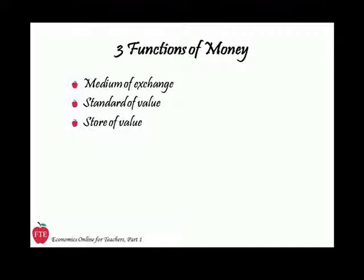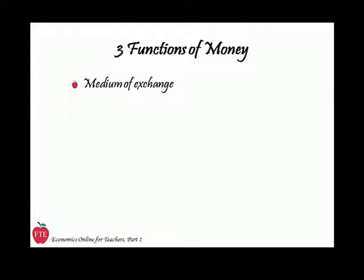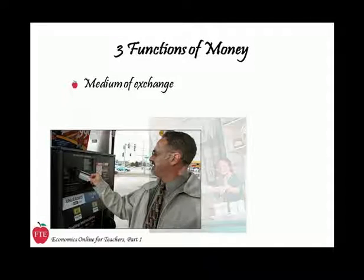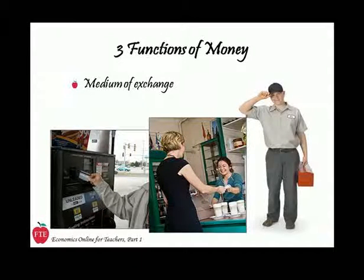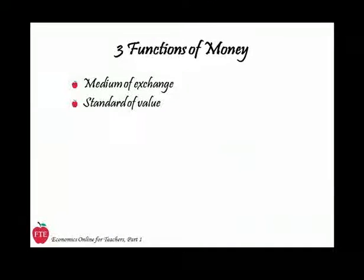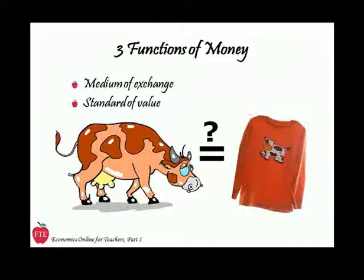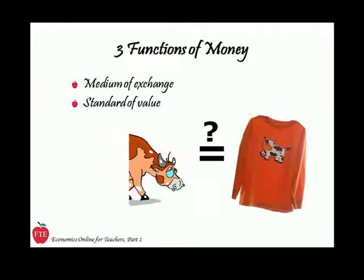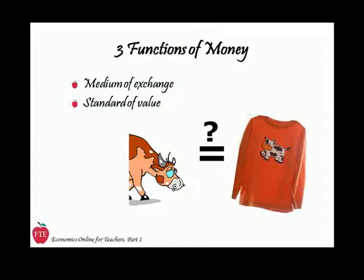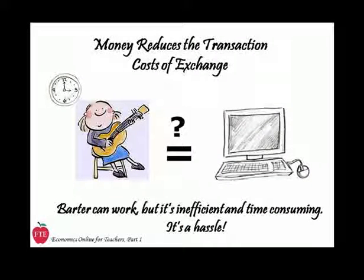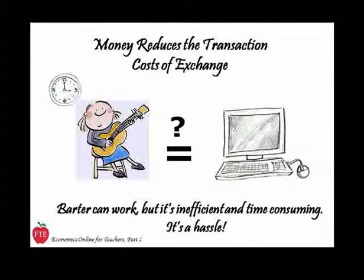But more importantly, whatever commodity became money had to perform three functions in order to be generally accepted in exchange for goods and services. First, whatever we choose as money must act as a medium of exchange — the gas station, the coffee shop, and the cable guy all must accept it in return for their goods and services. Second, money is a standard of value. We could exchange without money by bartering for goods and services, but think how costly it is to establish the comparable values of the things we want to trade. How many cows are worth a shirt? How many hours of music lessons are worth a computer? Barter is a hassle — in economic terms, it has high transaction costs.